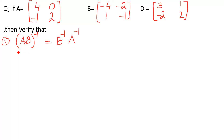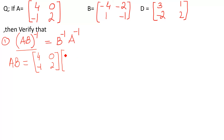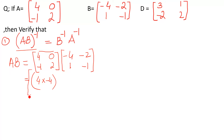We start from the left hand side, which is AB whole inverse. First we solve whatever is inside the parenthesis — there is no sign between A and B, meaning multiplication. So we multiply A, which is [4, 0; -1, 2], by B, which is [-4, -2; 1, -1]. We use first row with first column, then first row with second column.